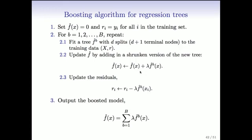We build a relatively small tree to the residuals, then update the function by adding that tree into our current model. Our current model starts off at zero, and repeatedly we add in the tree we've just grown. When we add it in, we actually shrink it down by a factor lambda. So there are two components: growing the tree to the residuals, and then adding in some shrunken version of it into your current model. That lambda is pretty small — something like 0.01. Then of course you update the residuals, because the residuals will change by a corresponding amount. You keep doing that: grow tree to the residuals, add it into your function, update the residuals, and continue.